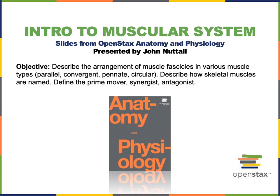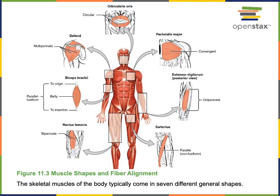In this video I will describe the arrangement of muscle fascicles and various muscle types: parallel, convergent, pennate, and circular fascicle arrangements, and describe how skeletal muscles are named and define the prime mover, synergist, and antagonist. This illustration shows us seven different general shapes of muscles resulting from the alignment of fibers and fascicles.